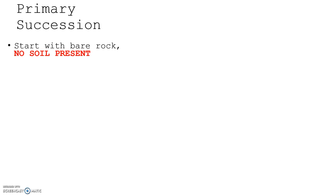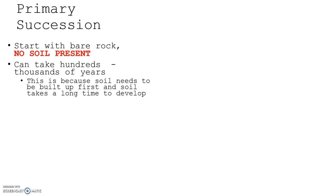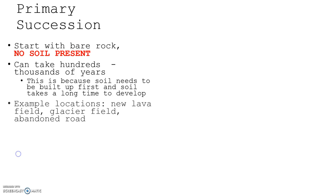The most important thing, highlighted in red, is that primary succession starts with bare rock — there is no soil present. It can take hundreds to thousands of years, because soil needs to be built up first, and soil takes a long time to develop.